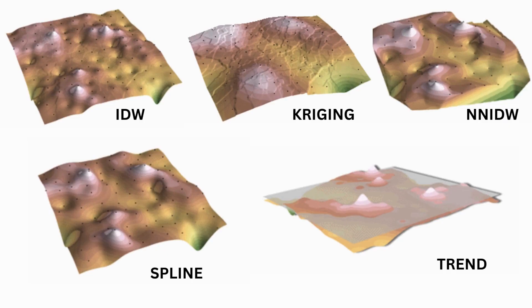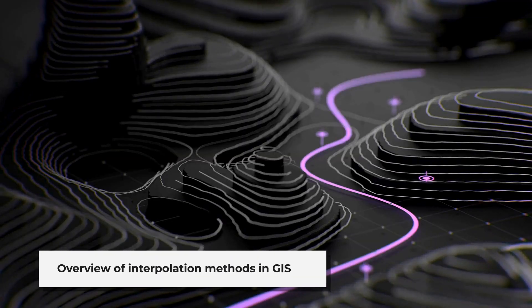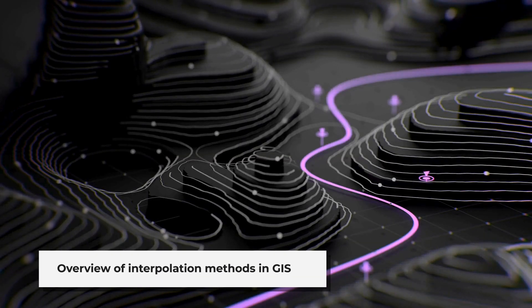These are five most used interpolation methods we discussed here. There are more methods such as point interp, topo to raster, etc. And that wraps up our introduction to interpolation methods in GIS. I hope this gave you a clear overview of each method.